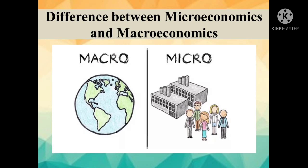Next, Distinction between Microeconomics and Macroeconomics. Microeconomics is that part of economic theory which studies the behavior of individual units of an economy, for example a firm, a household, etc. Microeconomics aims to determine the price of a commodity or factor of production.